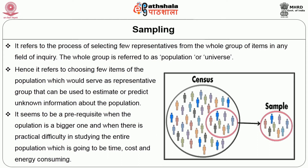Selecting a sample for the study is the most crucial step in research. Sampling refers to the process of selecting few representatives from the whole group of items in any field of inquiry. The whole group is referred to as the population or universe. Sampling refers to choosing few items of the population which would serve as a representative group that can be used to estimate or predict unknown information about the population. Sampling is a prerequisite when the population is large and when there is practical difficulty in studying the entire population.